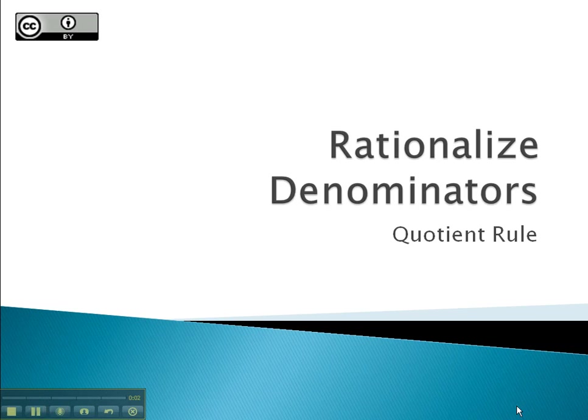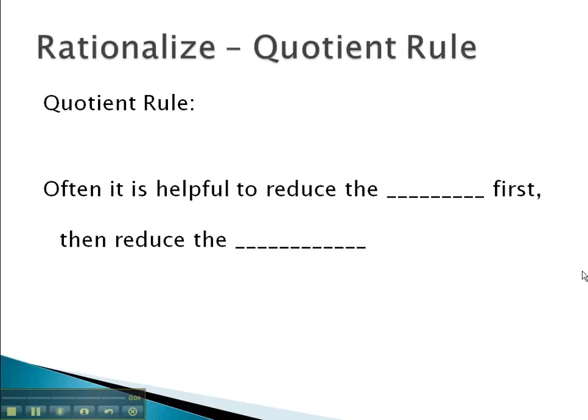In this video, we're going to look at dividing with radicals using what is called the quotient rule. The quotient rule tells us that if we have the square root of a fraction, such as a over b, we can take the square root of just the top number over the square root of the bottom number, and treat those square roots separately.